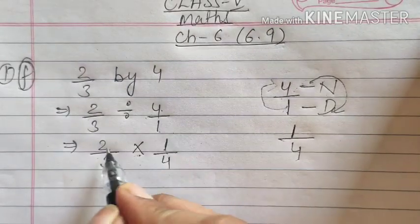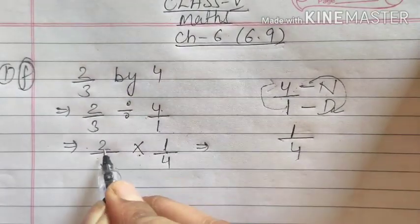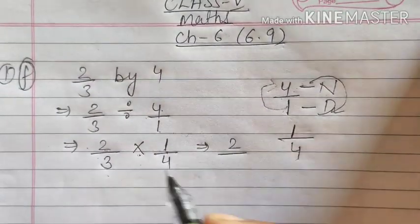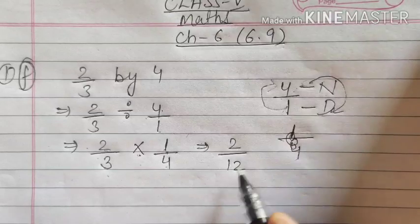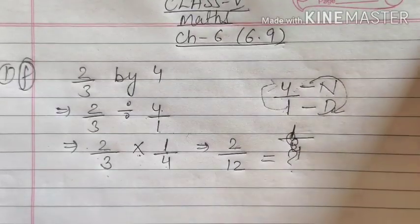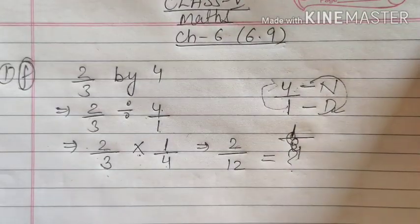Now, same concept: numerator into numerator will be numerator. 2 into 1 is 2 upon denominator into denominator. That is 12. Now you can convert it into simple fraction by prime factorization that you will do by yourself. This is first method.